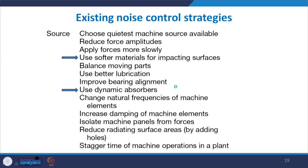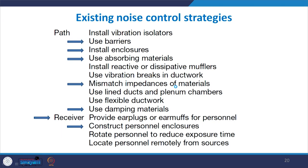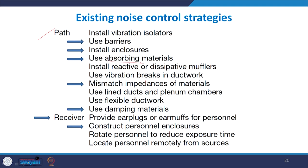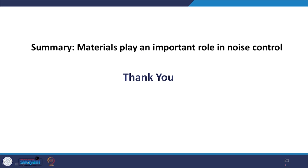An overview of existing noise control strategies shows that in most of them, the use of materials is very common — materials are used to absorb sound, enclose sound, or block sound. In summary, noise control can be source-based, path-based, or receiver-based, but in the majority of cases, the use of materials plays an important role. With this, the lecture on principles of noise control ends, and next week we will start with acoustic materials.